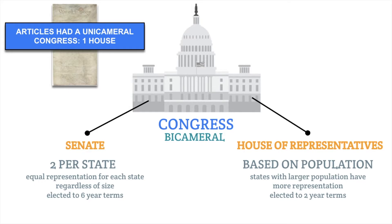Members of the House will be elected to two-year terms, while members of the Senate will be elected to six-year terms. The Senate is seen as the upper house of Congress and has certain responsibilities and powers, and the House has others, but they must work together to pass legislation.